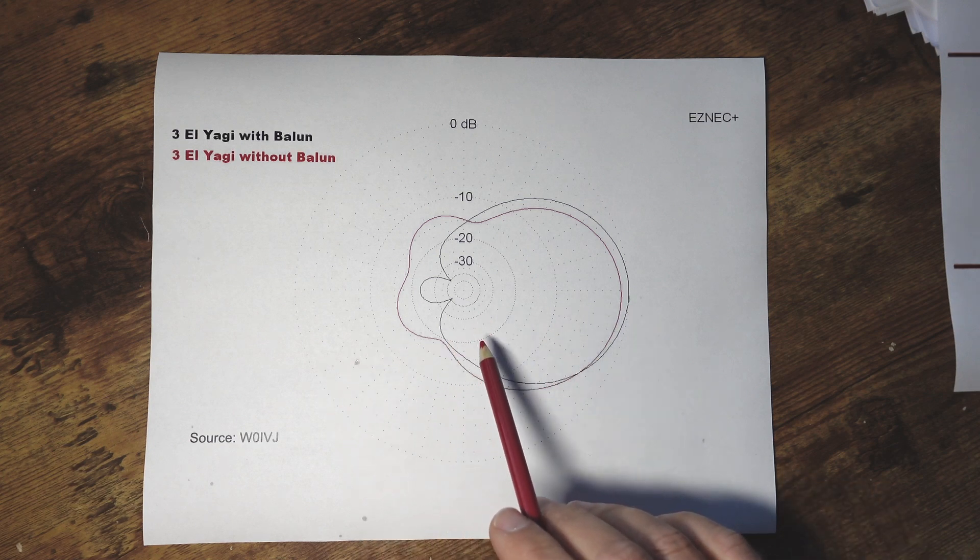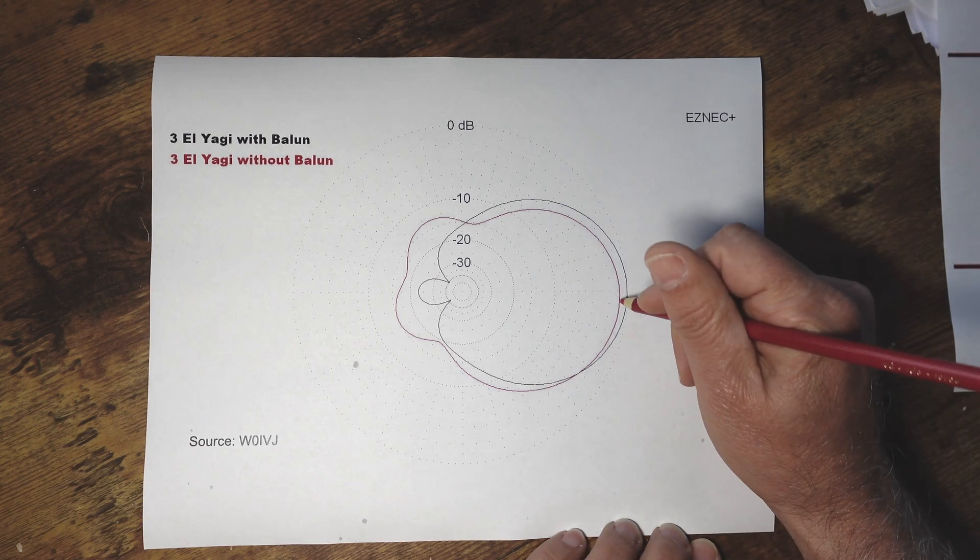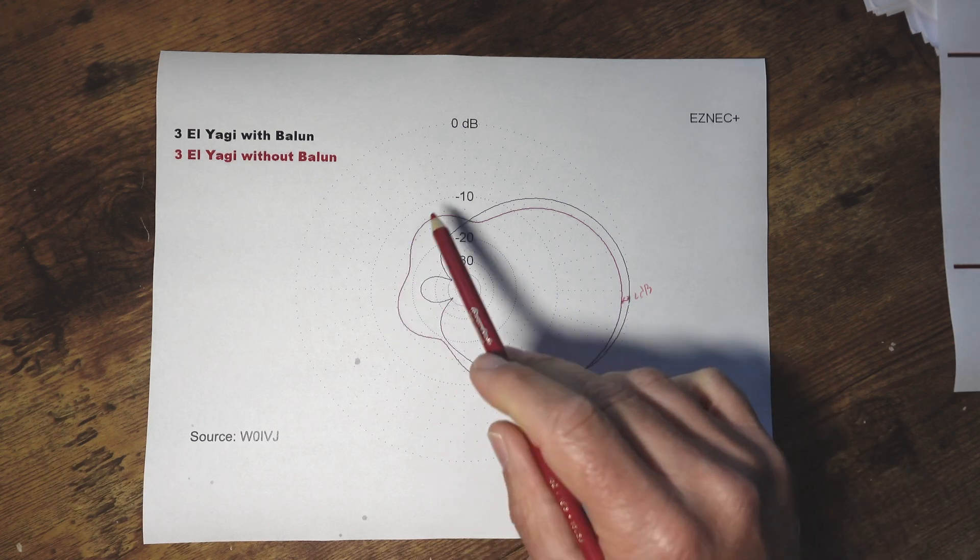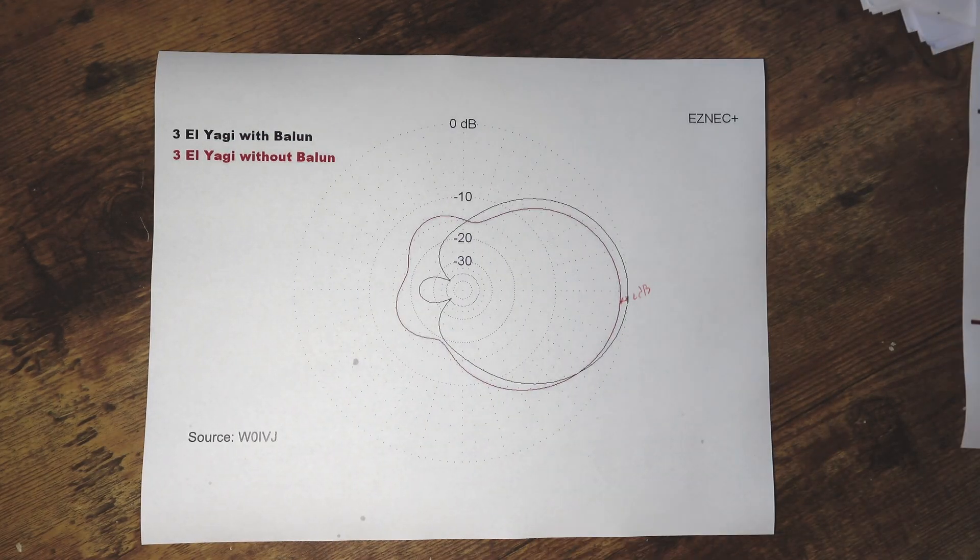But if we do a simulation without a common mode choke you can see that we lose here, it's about 2 dB actually, but also we get, you know, the back side is not as good as it was with the common mode choke.